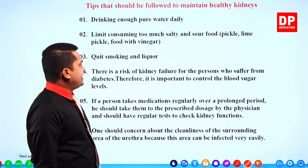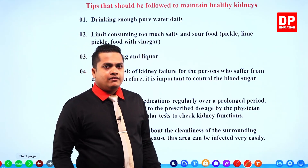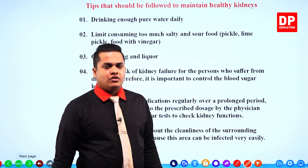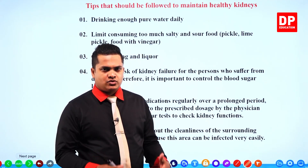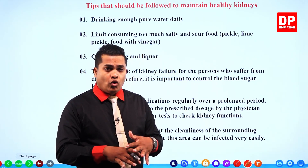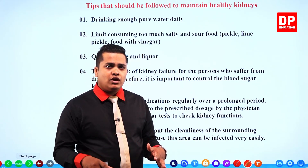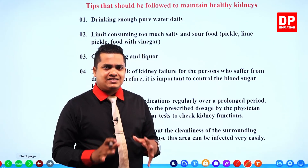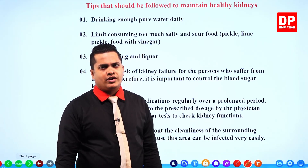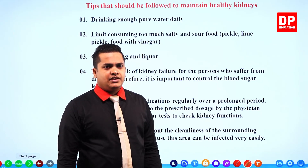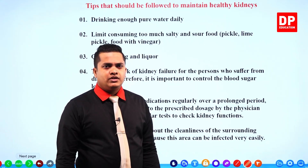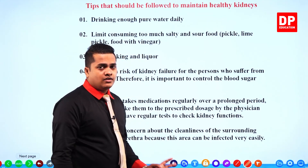Third, quit smoking and liquor. As explained earlier, smoking and alcohol affect each and every organ system in the body — not only the urinary system. To avoid a whole range of diseases and to have good organ systems overall, it is important to quit these two bad habits. In order to have good kidneys, we must quit from smoking and stop using liquor.